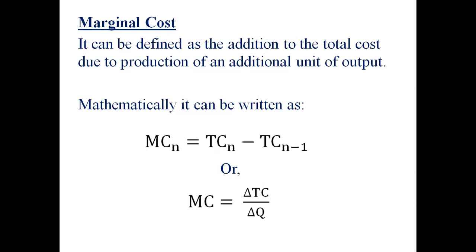Hello everyone. We are continuing with the chapter called Cost and Revenue Analysis. Today we will discuss marginal cost. Marginal cost is actually the additional cost that is incurred because of an additional unit of output. If you produce any additional unit of any product or goods and services, that is called marginal cost.